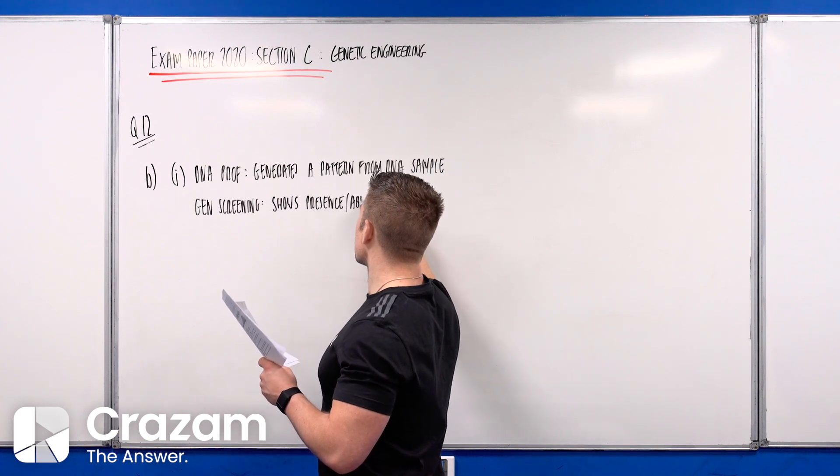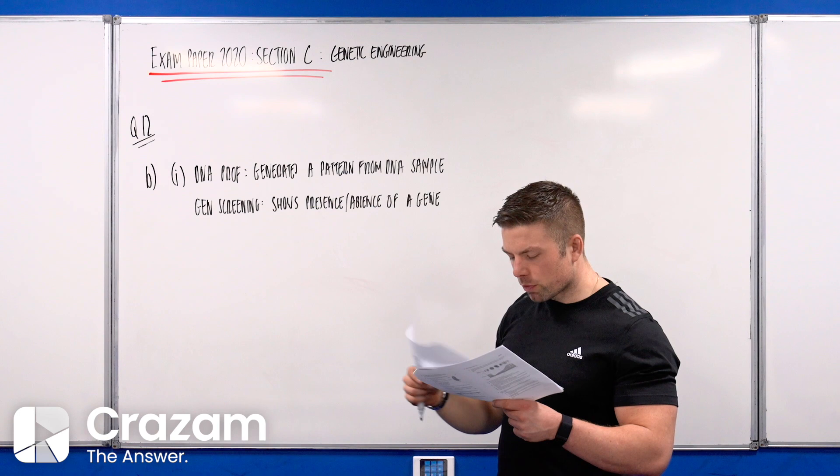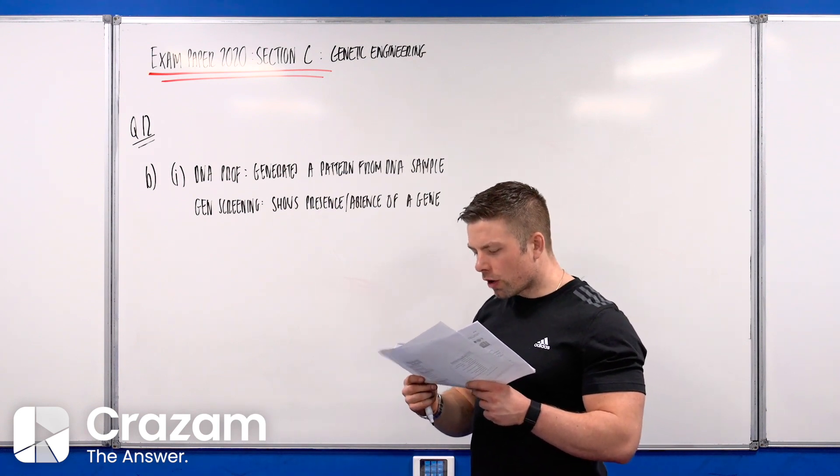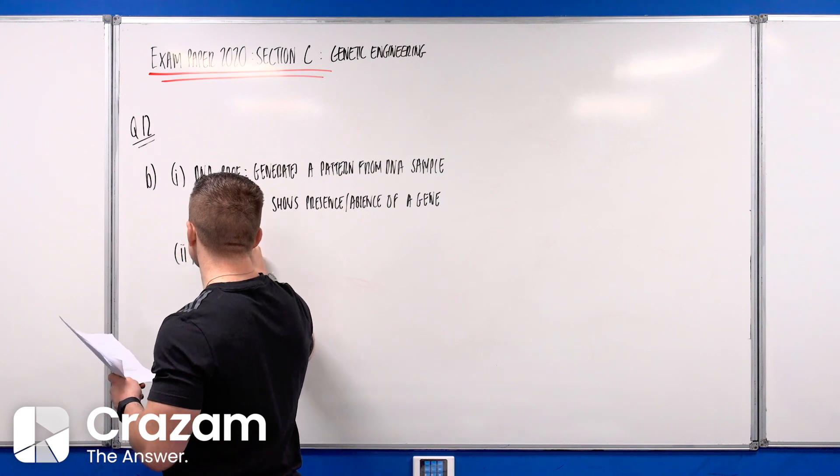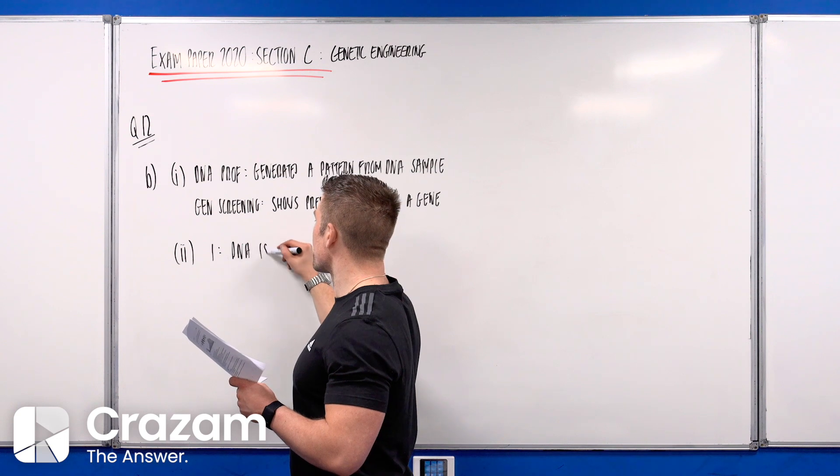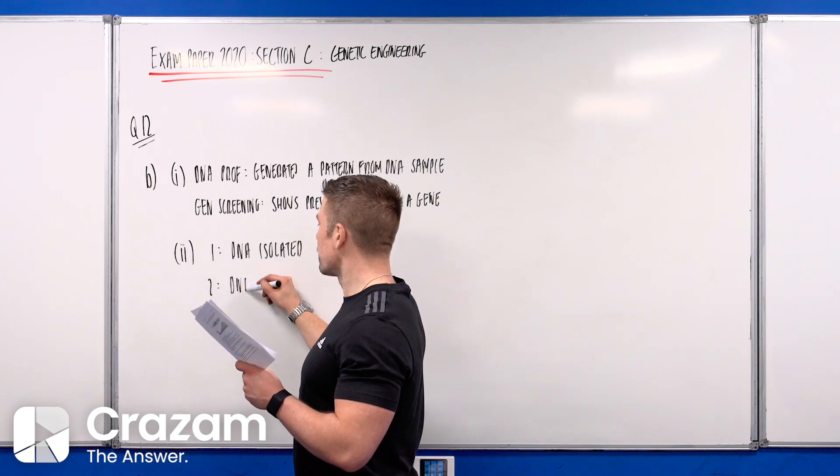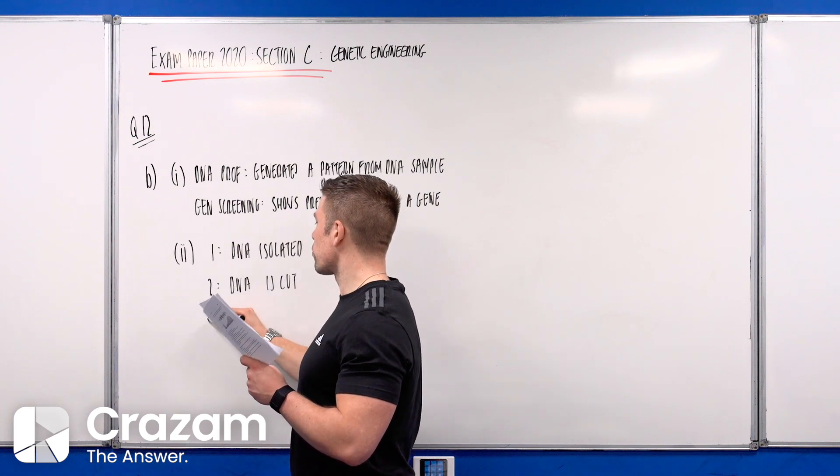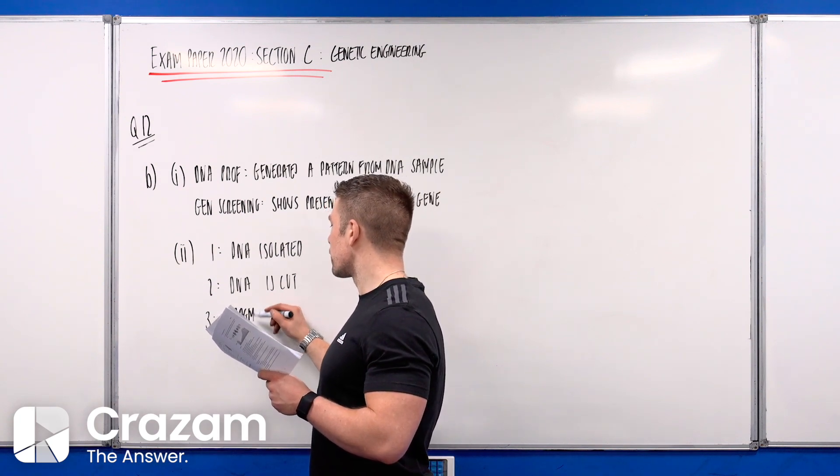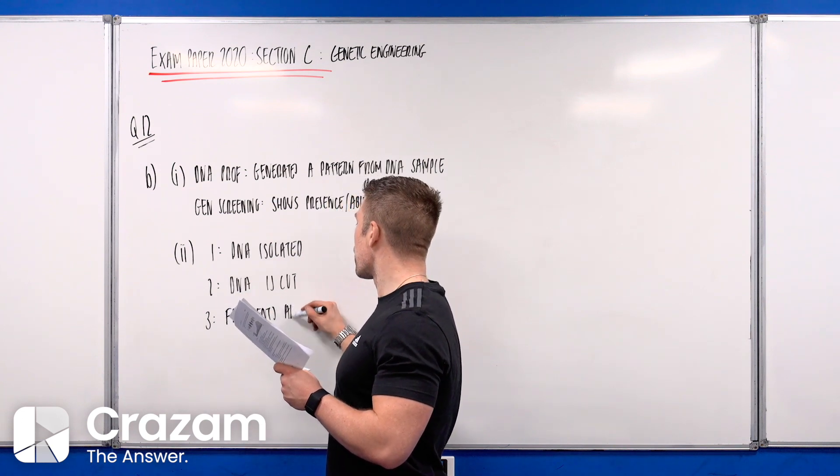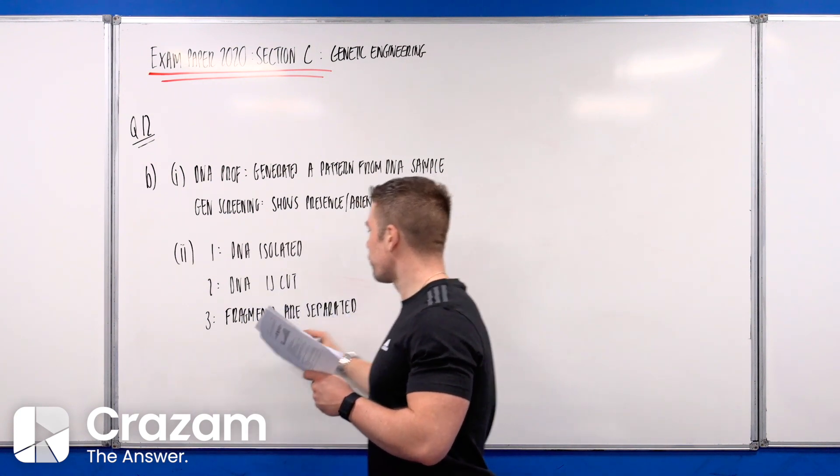Part 2: explain each of the stages 1 to 4 of DNA profiling shown above. Stage 1 is the DNA is isolated. Stage 2, the DNA is cut using restriction enzymes. Stage 3, the fragments are separated.